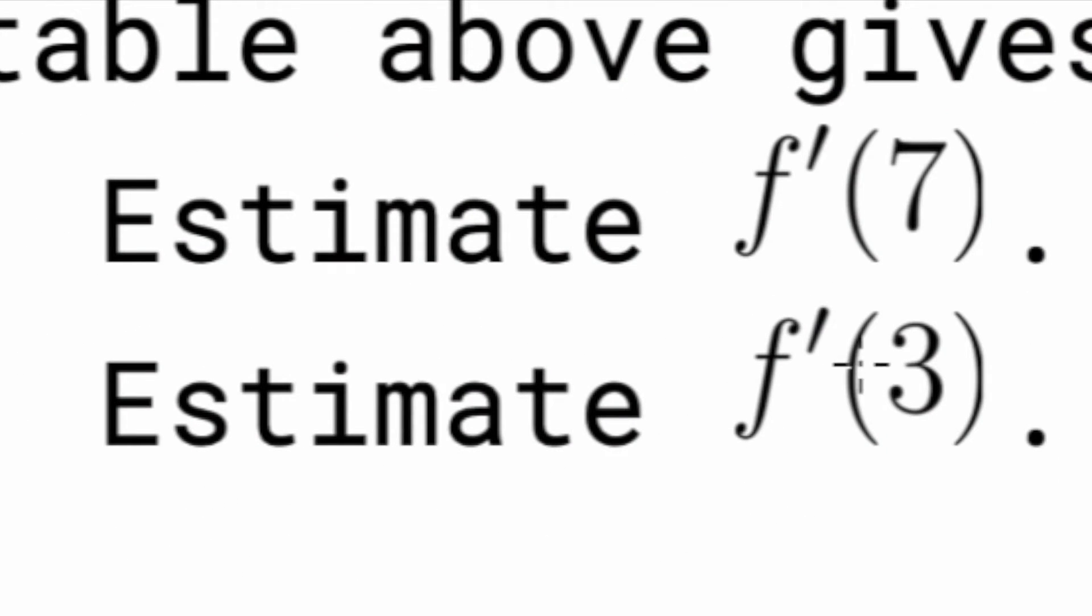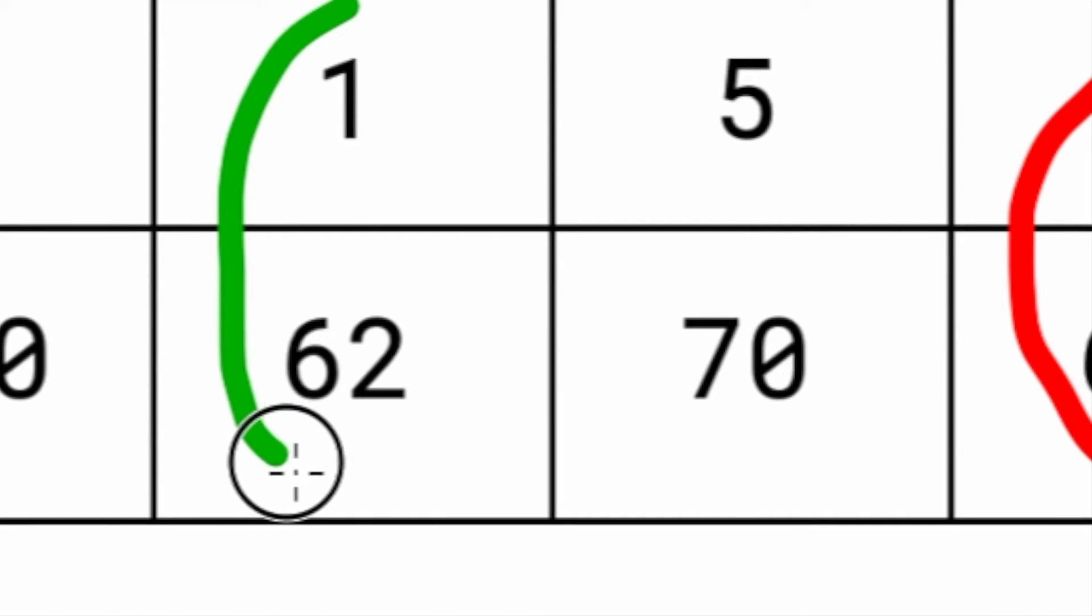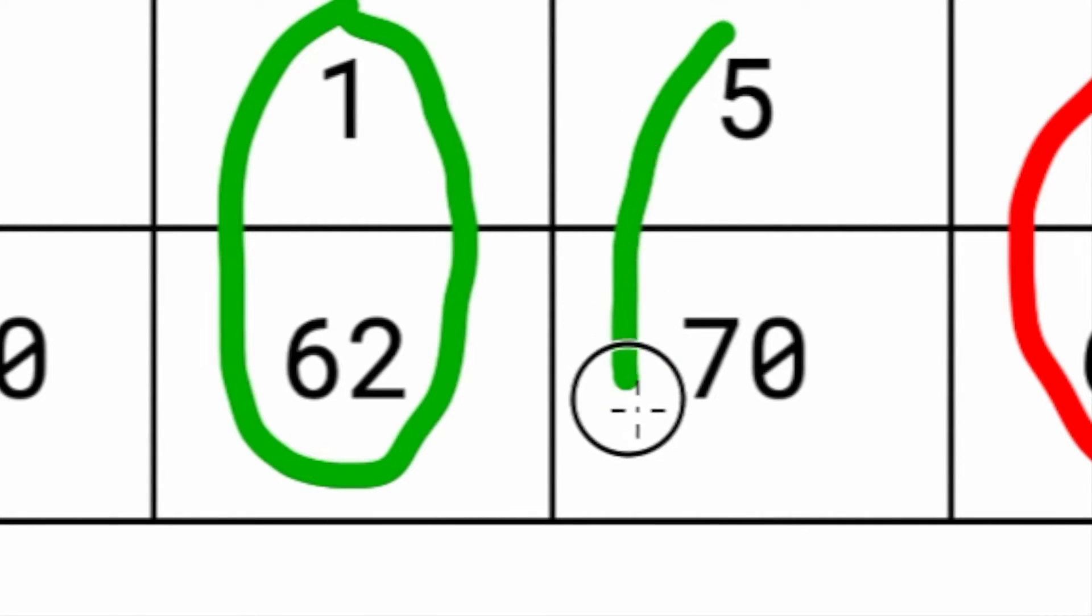Now, if you look at the other problem, it says what's f'(3). Well, 3 is going to be between 1 and 5, so we're going to use x equals 1 and x equals 5. We use these two values because 3 is in between them.